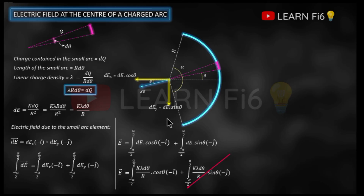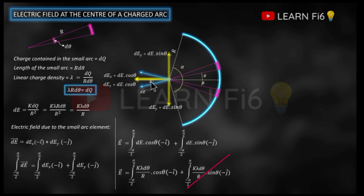The entire vertical component is zero because for every element in the top of the horizontal line, there is a similar element at the bottom. The electric field due to those paired elements can each be resolved into horizontal and vertical components. The horizontal components add together, but the vertical components are equal and opposite, so they cancel each other — that is why the vertical component is zero.